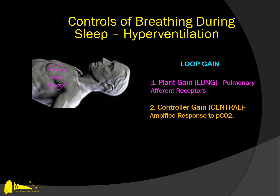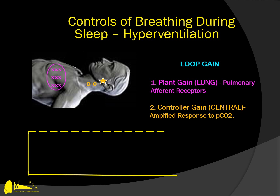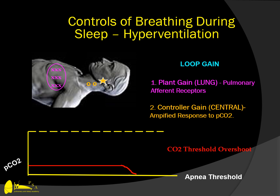Also, the central element is controller gain, which means that in the brain stem there can be an amplified response to PCO2 that will result in a signal being sent back to the respiratory muscles and the lung to increase minute ventilation. As a result of either of these elements of loop gain, the impact of PCO2 on increased minute ventilation drives the PCO2 down — known as the CO2 threshold overshoot — resulting in apnea.